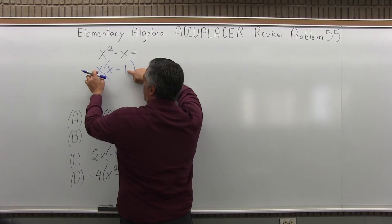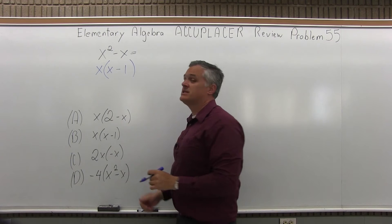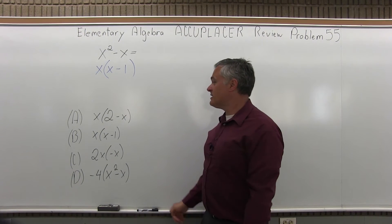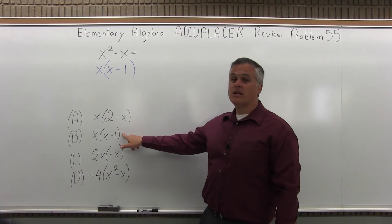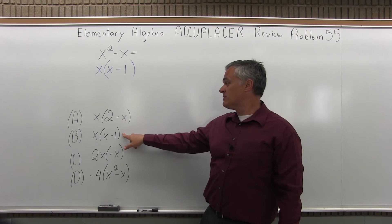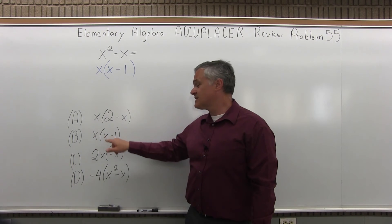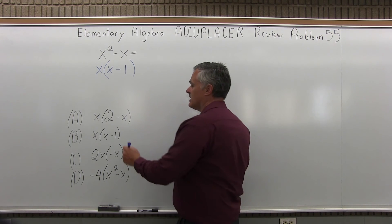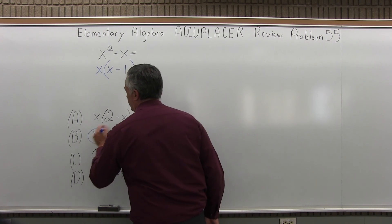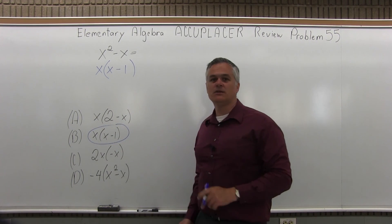I have factored out x. So I get an answer of x in front of the parentheses, x minus 1 inside the parentheses. And if I look at my list of potential options, option B is a perfect match with an x in front of the parentheses and an x minus 1 inside the parentheses. So the answer for problem 55 is option B.